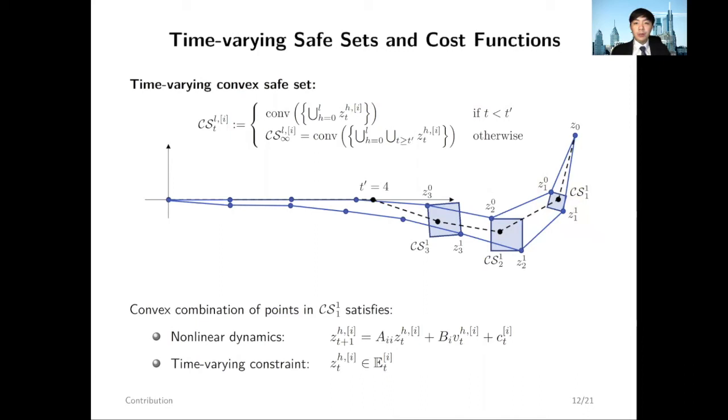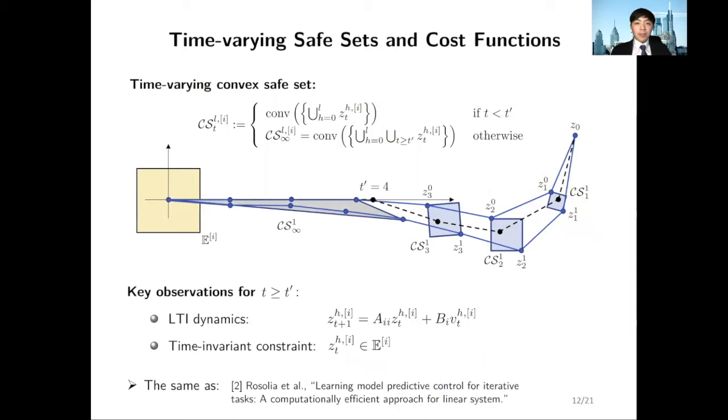Similarly, I'm showing the safe sets at time T equals 2 and 3. Now, for this particular example, the reference trajectories are zero after T prime equals 4. Notice that the subsystem dynamics become LTI and the bounded incompliance constraint is time invariant. In this case, we actually recover the learning MPC formulation.